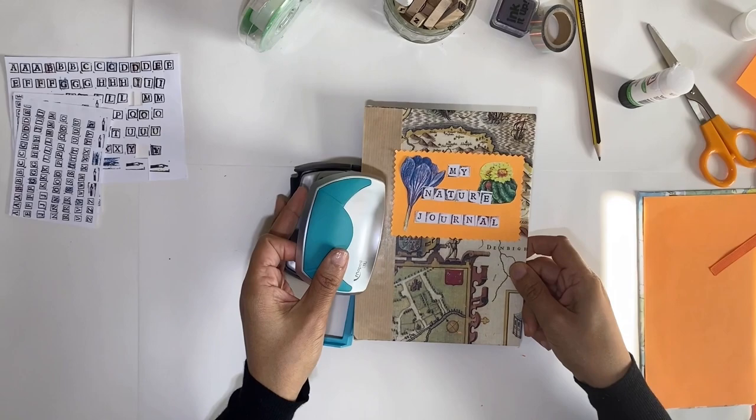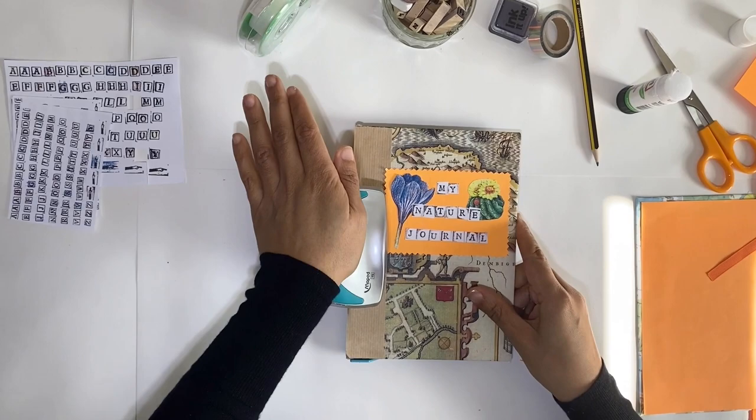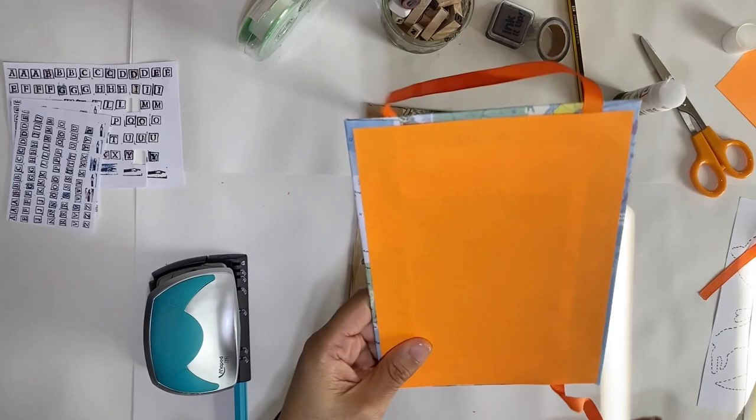So next, using the hole punch, carefully slot it in. Just pay attention to make sure that you've got it on the right setting. You might need a helping hand with this bit. And then make your hole in the front cover and the back cover.